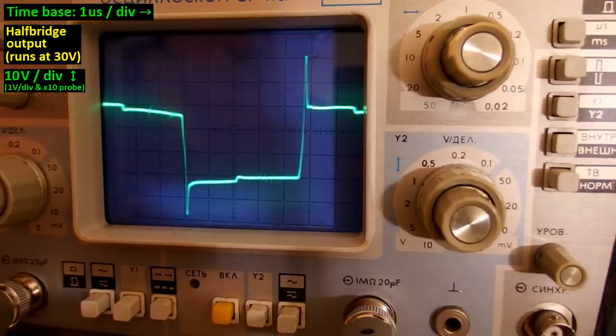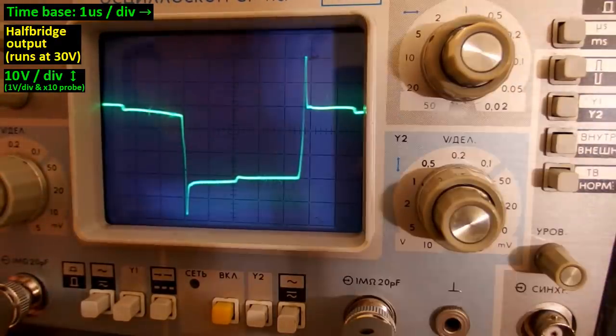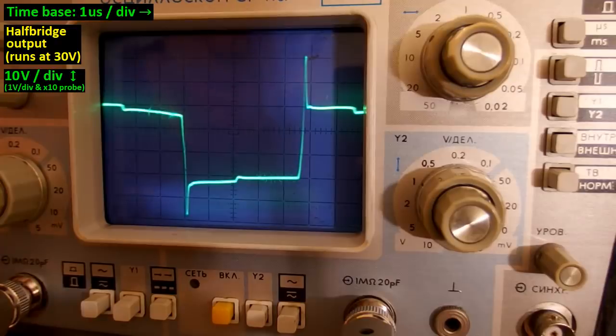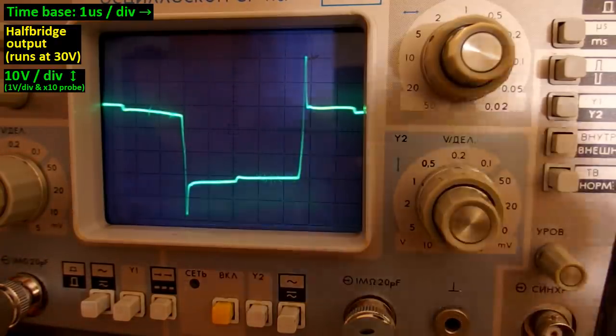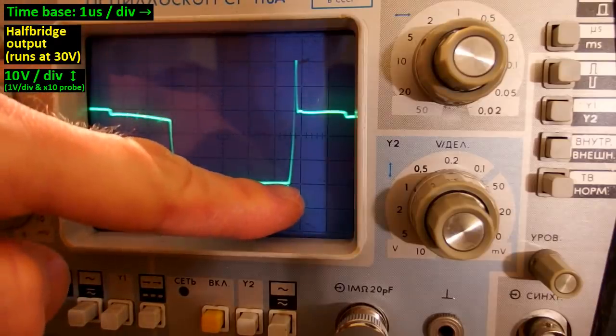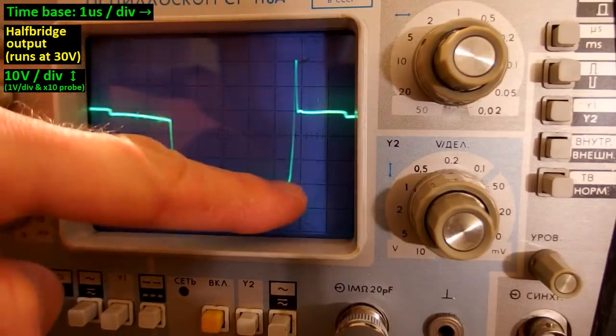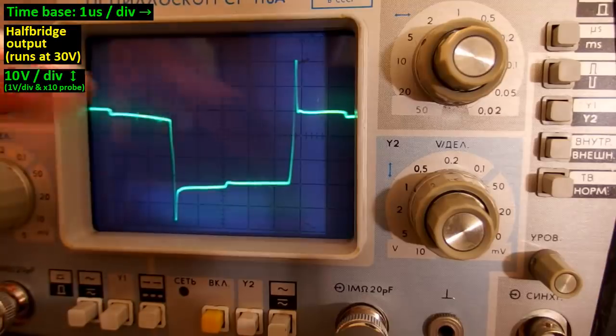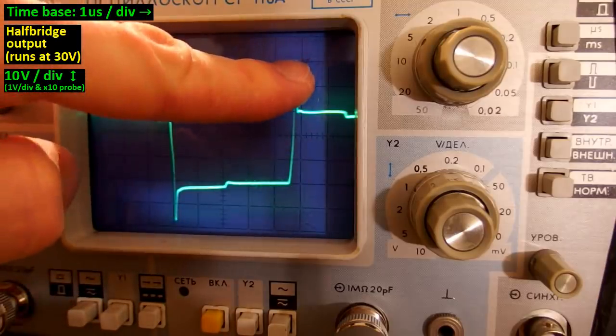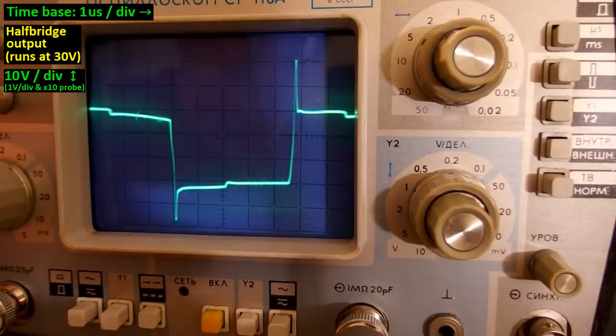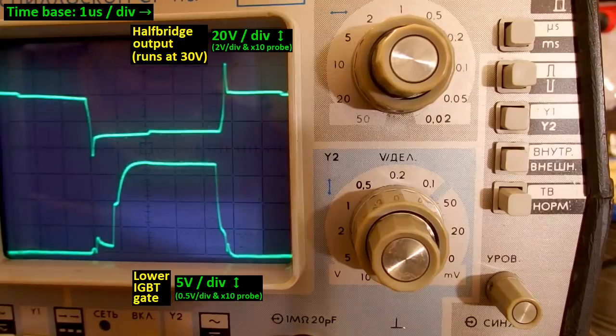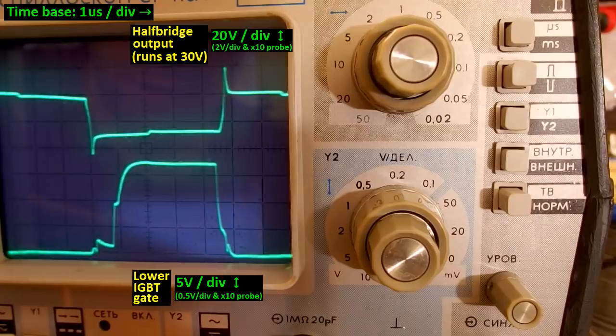Even the inductance of couple centimeters of a conductor is quite significant. And this is also the reason why the snubber networks have to be as close as possible to the transistors. And this is 10 volts per division. So the power supply voltage is about 30 volts. And with the overshoot, the total voltage on the transistor is about 50 volts.